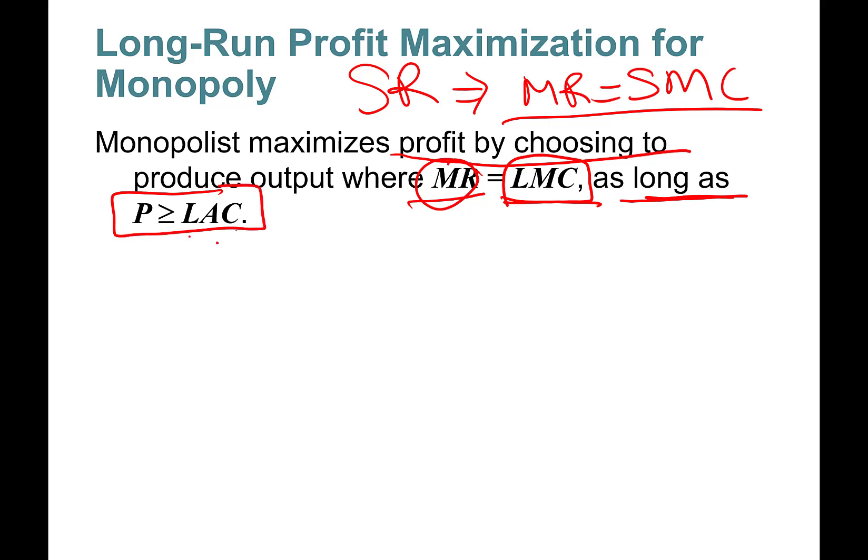It will exit industry if price is strictly less than average cost. So if you can't even cover your average cost, you make negative economic profits, you must exit in the long run.